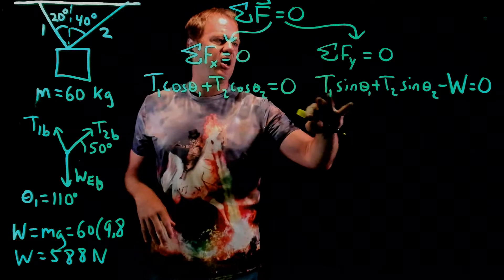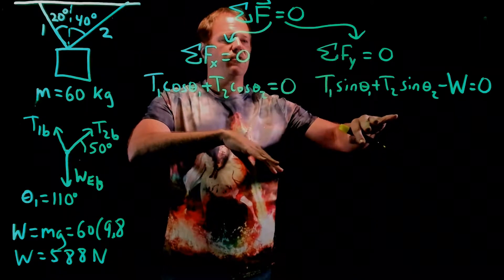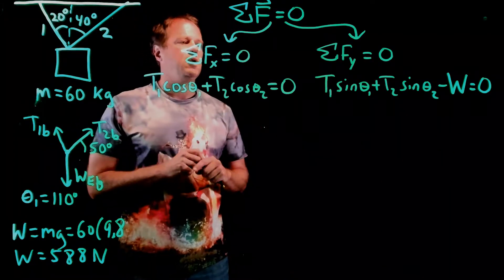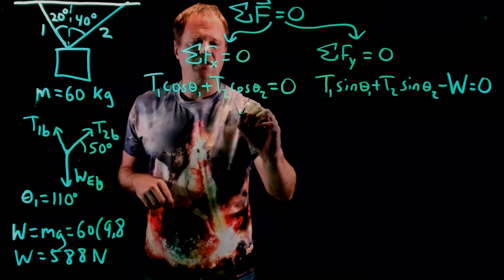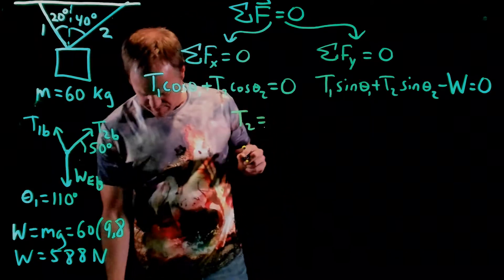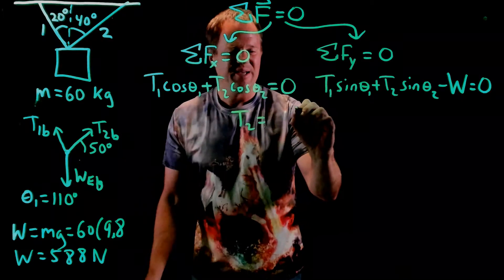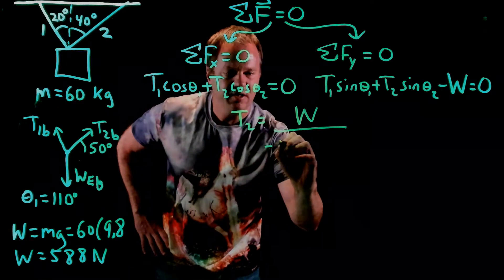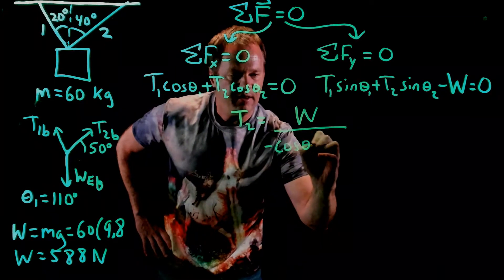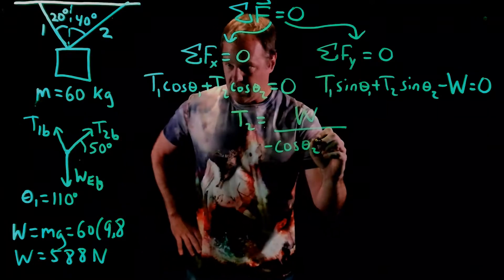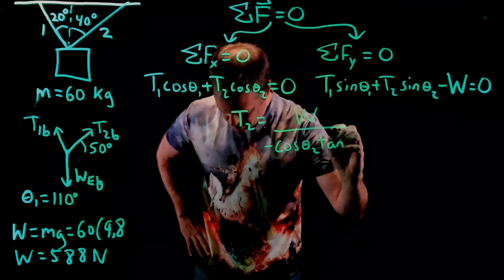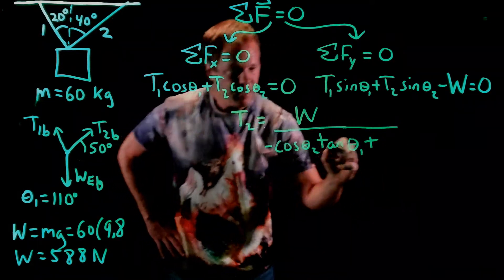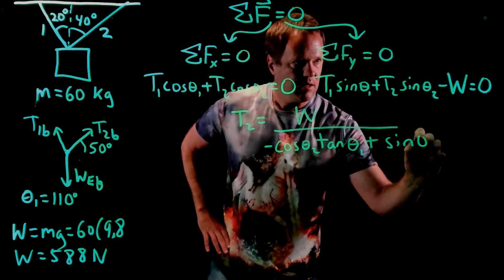Basically what I do here is I'm going to solve for T1 in this equation and then substitute it into this equation here. Solve for T2. You would certainly be welcome to do your algebra in a different way, but here's my symbolic solution for T2. You can check that yourself. It is W over the minus cosine theta 2 times tangent theta 1 plus sine theta 2.